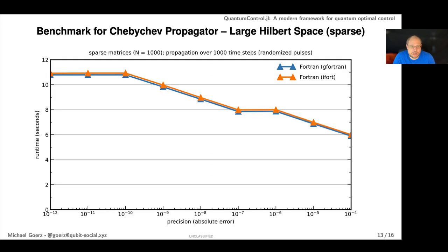Similarly, if you want to use sparse matrices for large Hilbert spaces—in Fortran we have our own implementation of sparse matrices—you get some kind of runtime, but if you use the Julia built-in data structures for sparse matrices it's already twice as fast just out of the box.